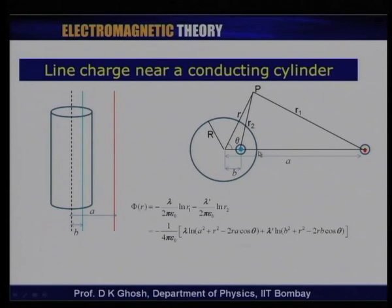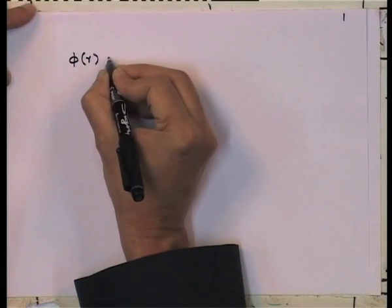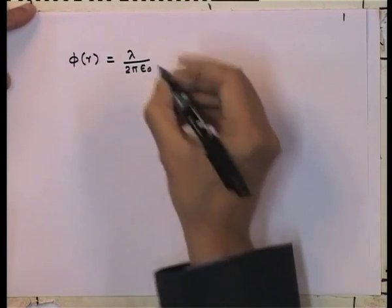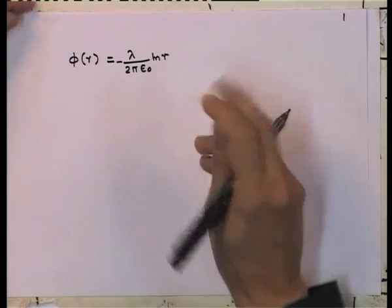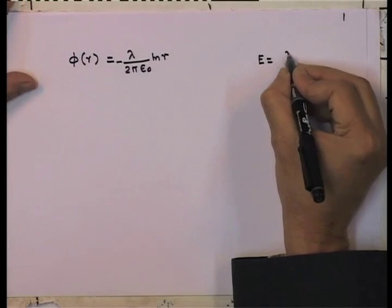This is a cross-sectional view. The red circle at the center is the original line charge perpendicular to the plane of the diagram, and the blue is the image charge with line charge density λ'. The potential due to a line charge is given by φ = −λ/(2πε₀) log r. Recall that the electric field due to a line charge found by Gauss's law is E = λ/(2πε₀r).